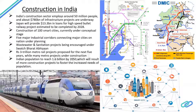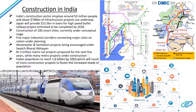Wastewater treatment plants and sanitation plans are being created under Swachh Bharat Abhiyan. The speaker mentioned being personally part of a wastewater treatment plan under Swachh Bharat Abhiyan and Swachh Ganga Abhiyan. Metro projects worth $3 trillion are proposed for the next five years, and some metro projects are already under construction. India's population is expected to reach 1.6 billion by 2050.